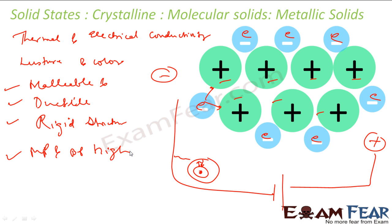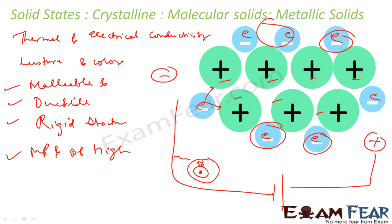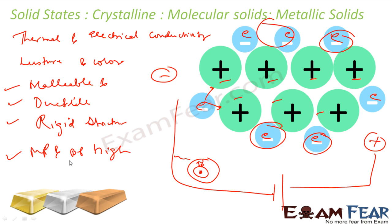To summarize metallic solids: they are thermally and electrically conductive, they have lustre and colors, they are malleable and ductile, they have a rigid structure with high melting and boiling points. All these properties arise due to the free electrons. Examples include gold, iron, and copper — all have lustre, high melting and boiling points, and good electrical conductivity.